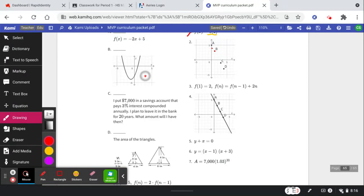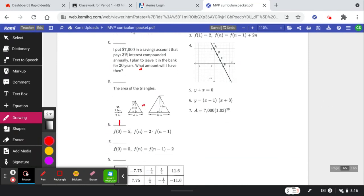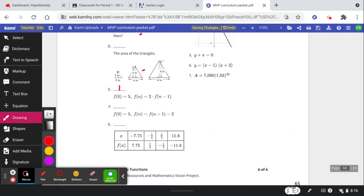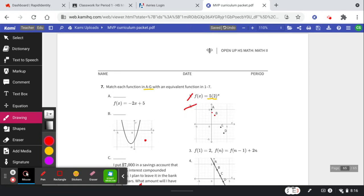This one is a quadratic, not linear. This one says we put 7,000 in. This one says area, base times height. Here's one that might work: F(0) = 5 and F(n) = F(n-1) - 2. So there's our match for number 2. Cross it out.